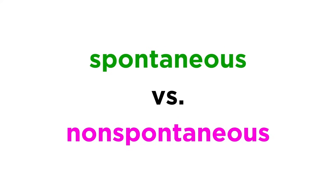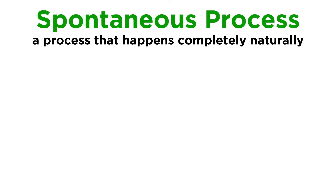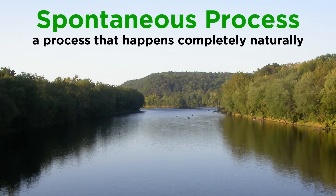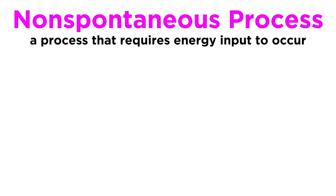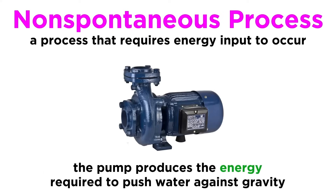We already know how to distinguish between a spontaneous and non-spontaneous process. A spontaneous process is one that simply happens on its own, completely naturally. Imagine water flowing in a river downhill — this happens because of gravity and is completely spontaneous, occurring with no intervention. A non-spontaneous process is one that will not occur unless it is driven by energy input from an external source. Water flowing uphill is non-spontaneous, meaning it won't happen on its own, but it can with the help of a pump that produces energy to drive the water against gravity.